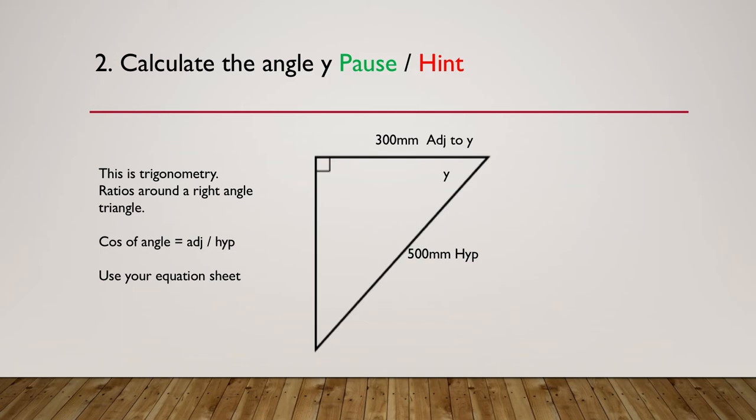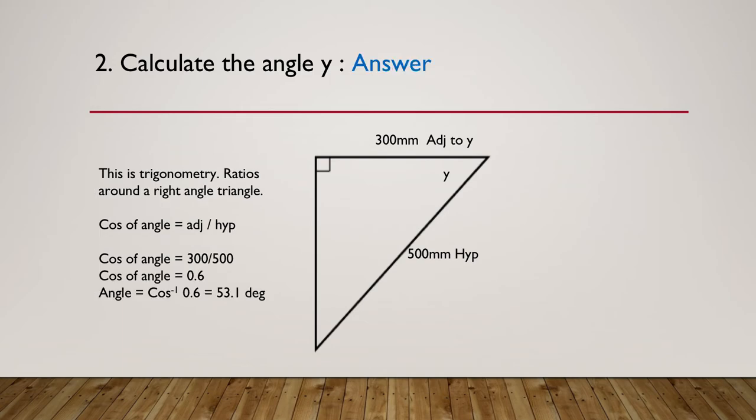So now let's move on to the answer. So here's our answer. So again, this is trigonometry ratios around a right angle triangle. The cosine of the angle is the adjacent over the hypotenuse, so the cos of the angle is 300 divided by 500. It's going to give us the ratio, and the ratio or the cos of the angle is 0.6. And to work out the actual angle in degrees, we would go cos to the minus 1 of 0.6, converts our ratio back to an angle, giving us 53.1 degrees.